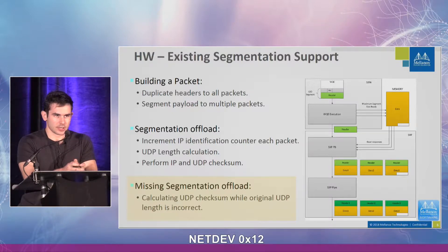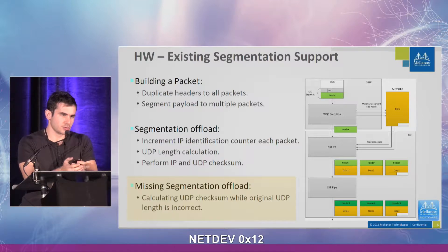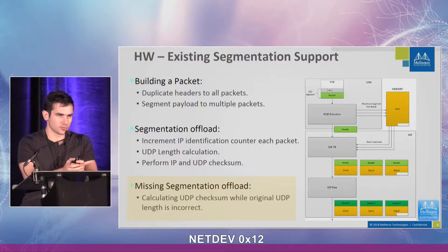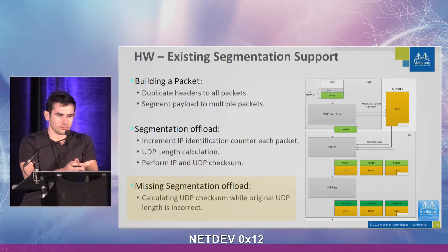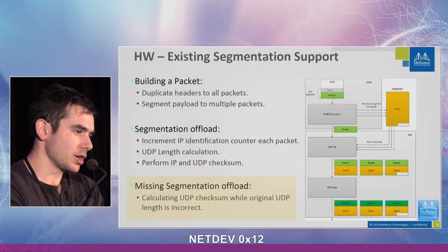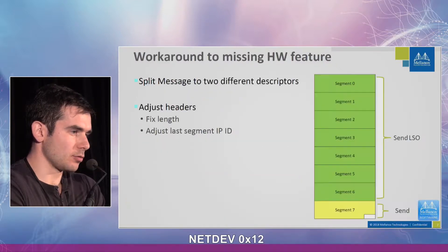However, in the case of our hardware, we are calculating the UDP checksum using the original UDP checksum and the original UDP length provided from software, which in the case of UDP GSO is incorrect. As a result, we would get packets with the wrong checksum. So we needed to find some workaround for this problem.